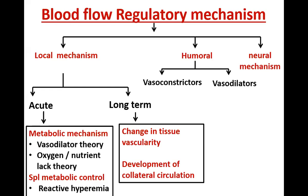Similarly, lactic acid production increases as a metabolic by-product, meaning H+ is increasing, and large amounts of K+ (potassium) also increase in the vicinity. Lot of ATP is utilized by the skeletal muscle, so ATP is broken down into adenosine plus ATP degradation products. All these substances accumulating in the vicinity — potassium ions, hydrogen ions, carbon dioxide, adenosine, ATP degradation products — act as vasodilators. They cause relaxation of the pre-capillary sphincter, arterioles, and metarterioles supplying that active tissue, therefore causing vasodilation and increasing blood flow to the active tissue.